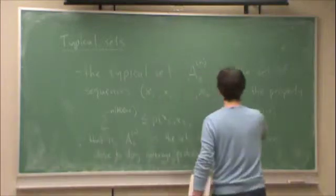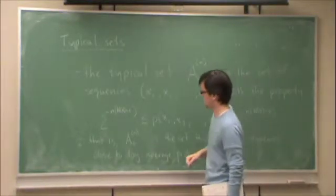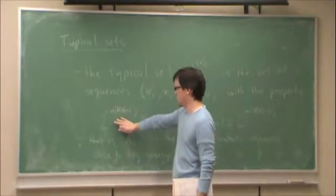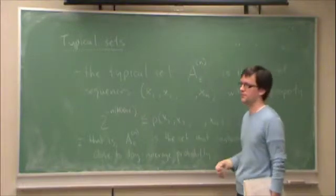If I take log on the left and the log on the right, what I get is N times h of X. And if I take log in here, then I just get the sampling like I did before.